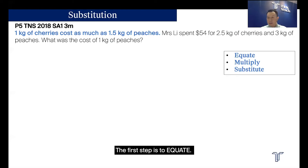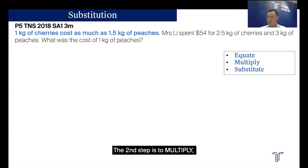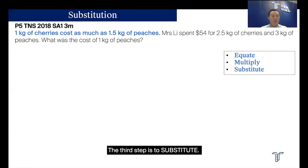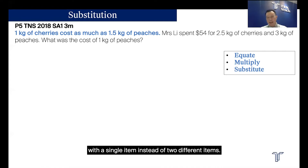The first step is to Equate. You will be required to use information from the question to form two equations, each containing the two items. The second step is to Multiply, where one of the items needs to be made the same by multiplying either one or both of the equations. The third step is to Substitute — we substitute one item for another so that you end up with an equation with a single item instead of two different items. Let's apply the three steps to this question.